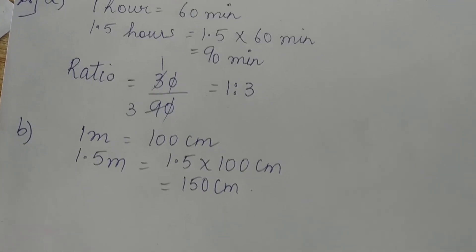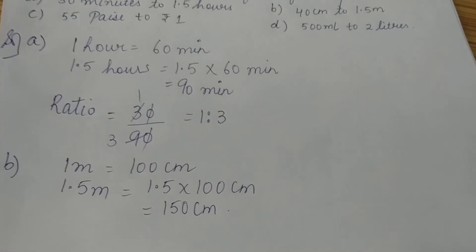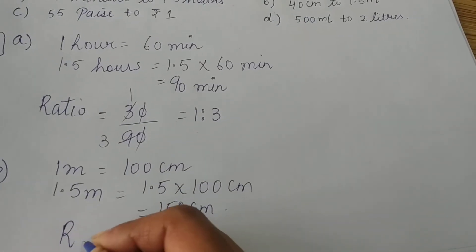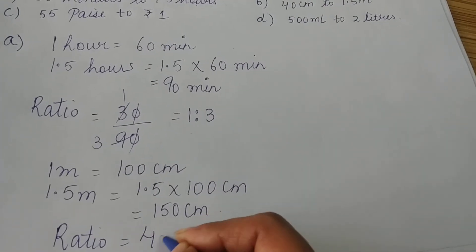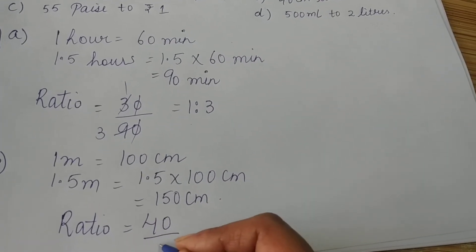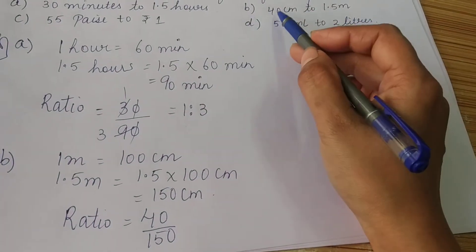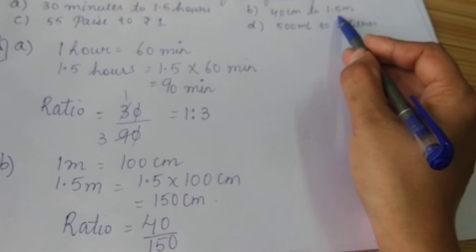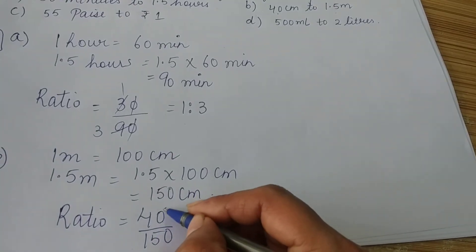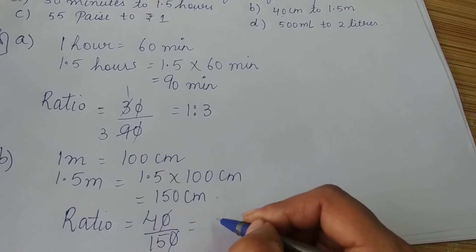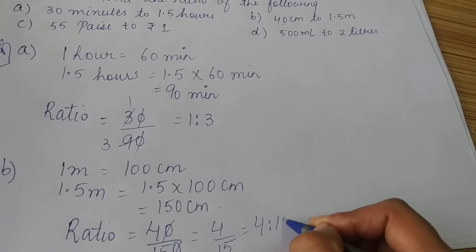So 1.5 meters equals 150 centimeters. Now we have to find the ratio of 40 centimeters to 150 centimeters, which is 40 upon 150. The zeros cancel out, giving us 4 upon 15. So the ratio is 4 is to 15.